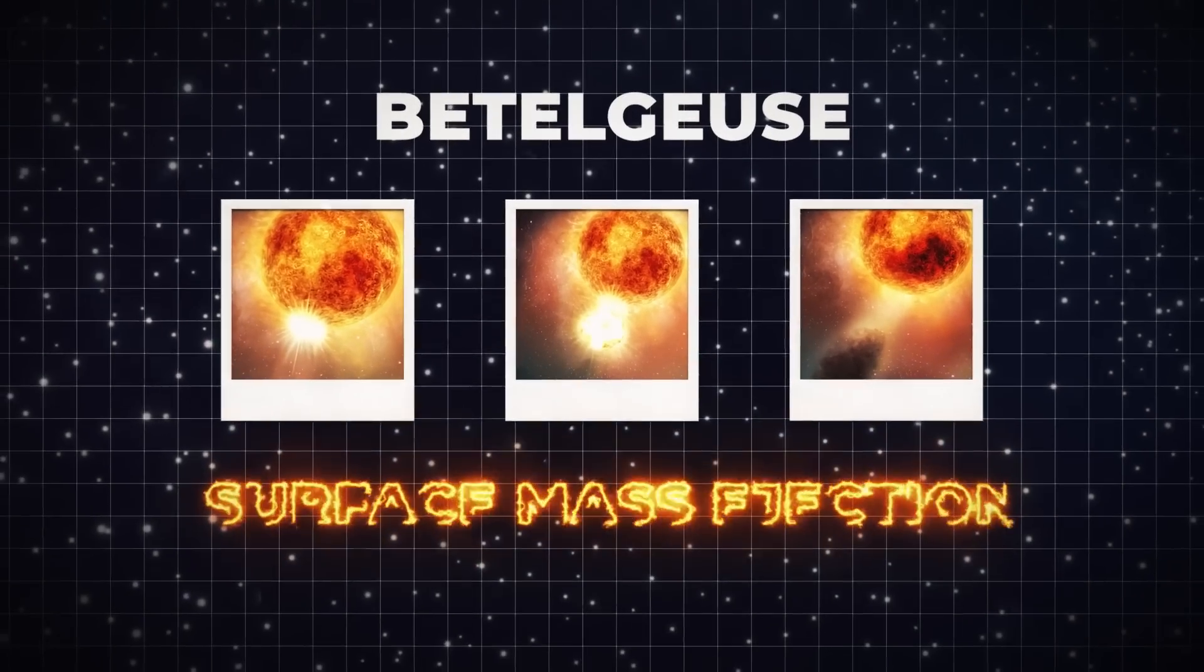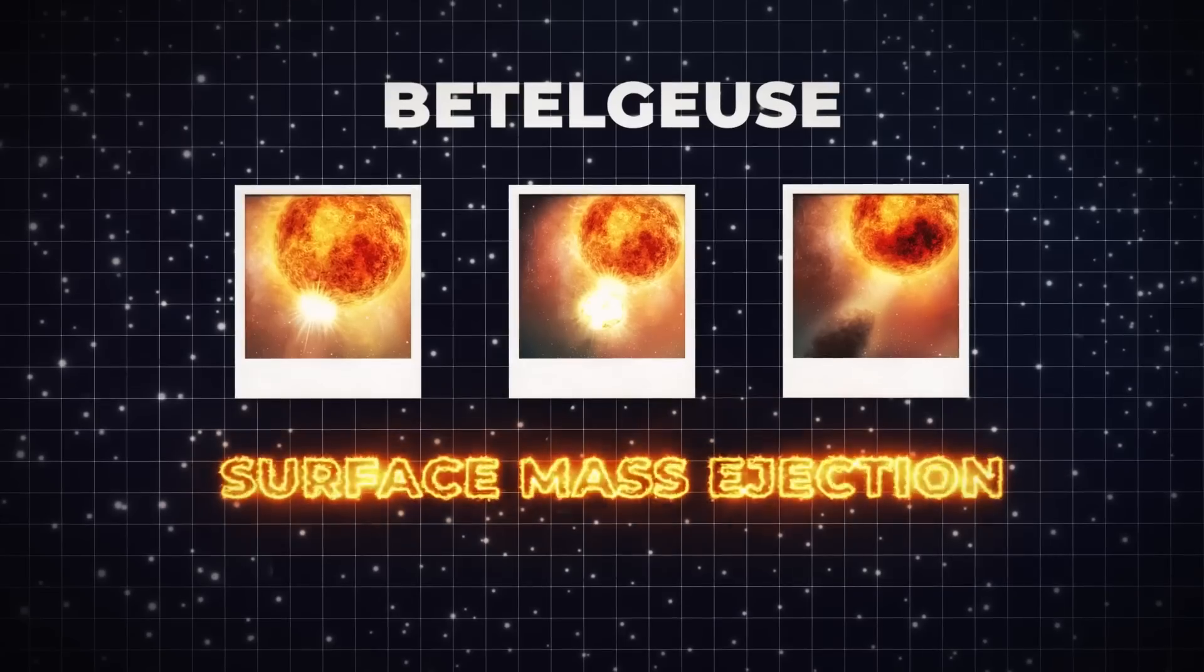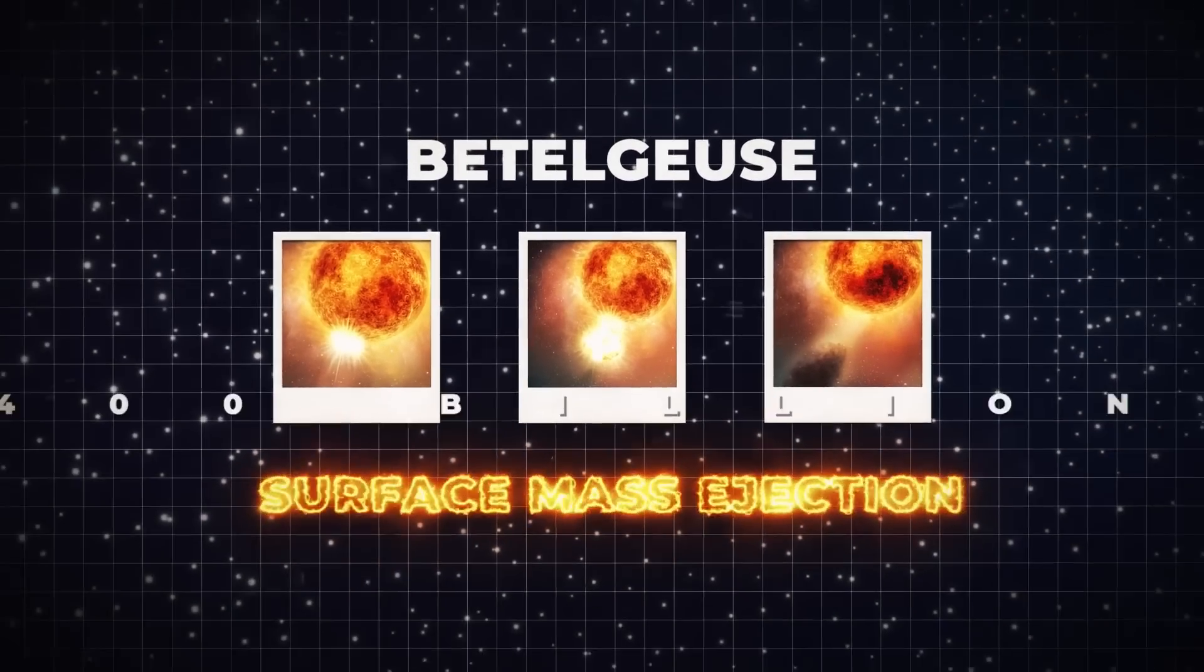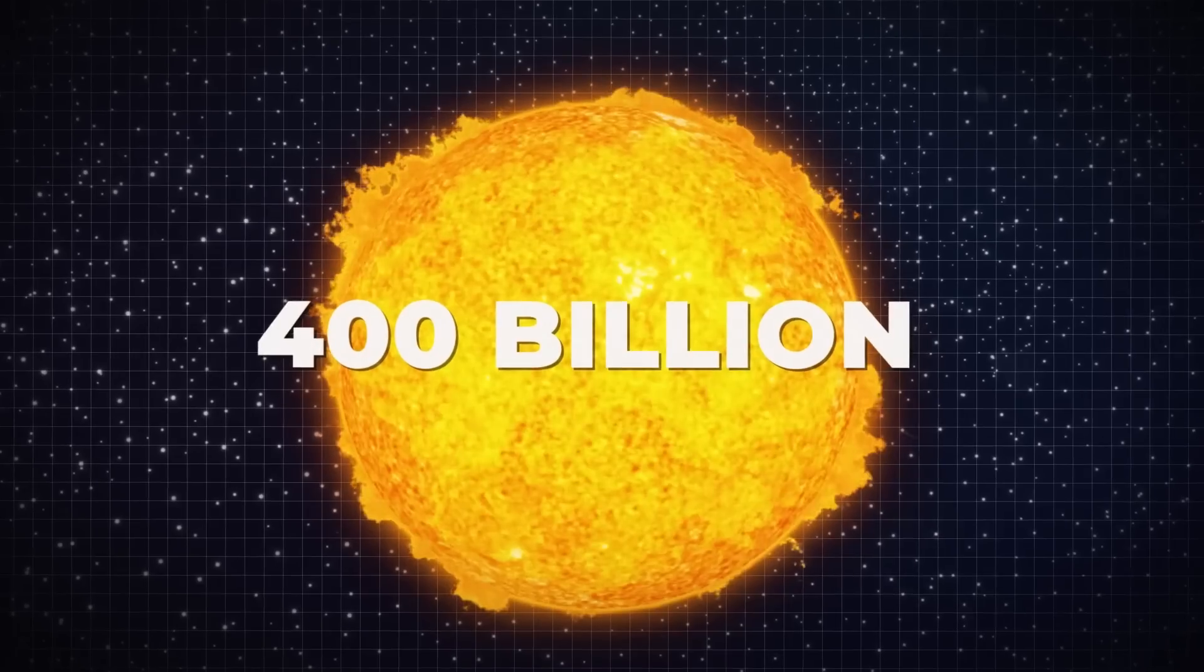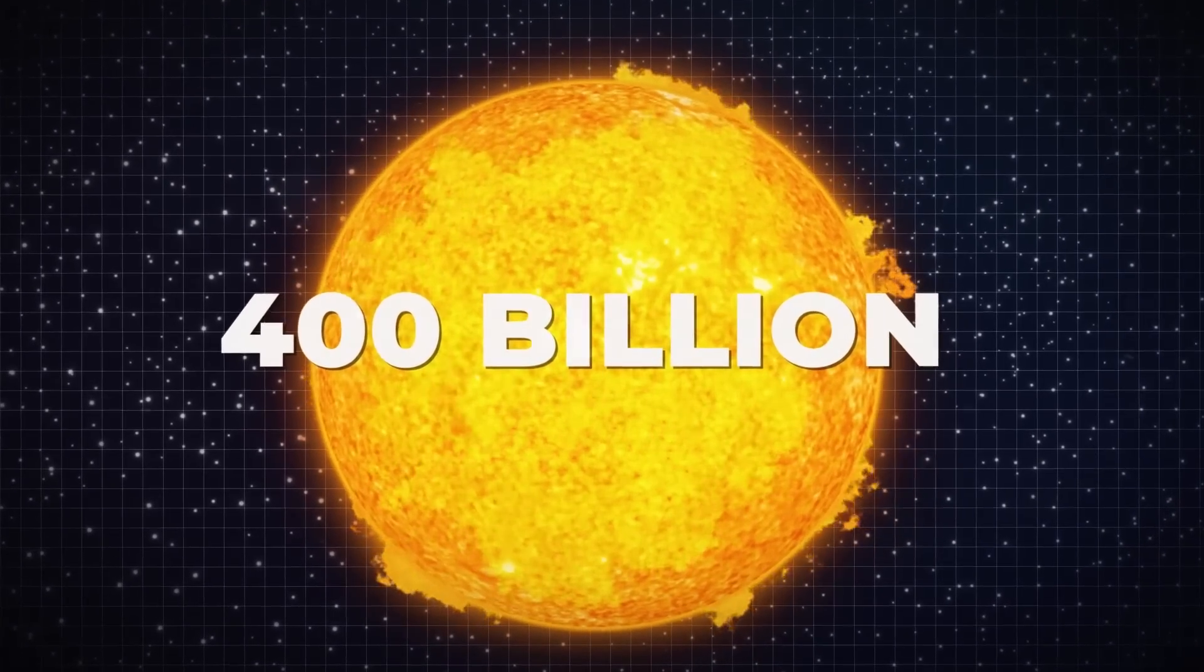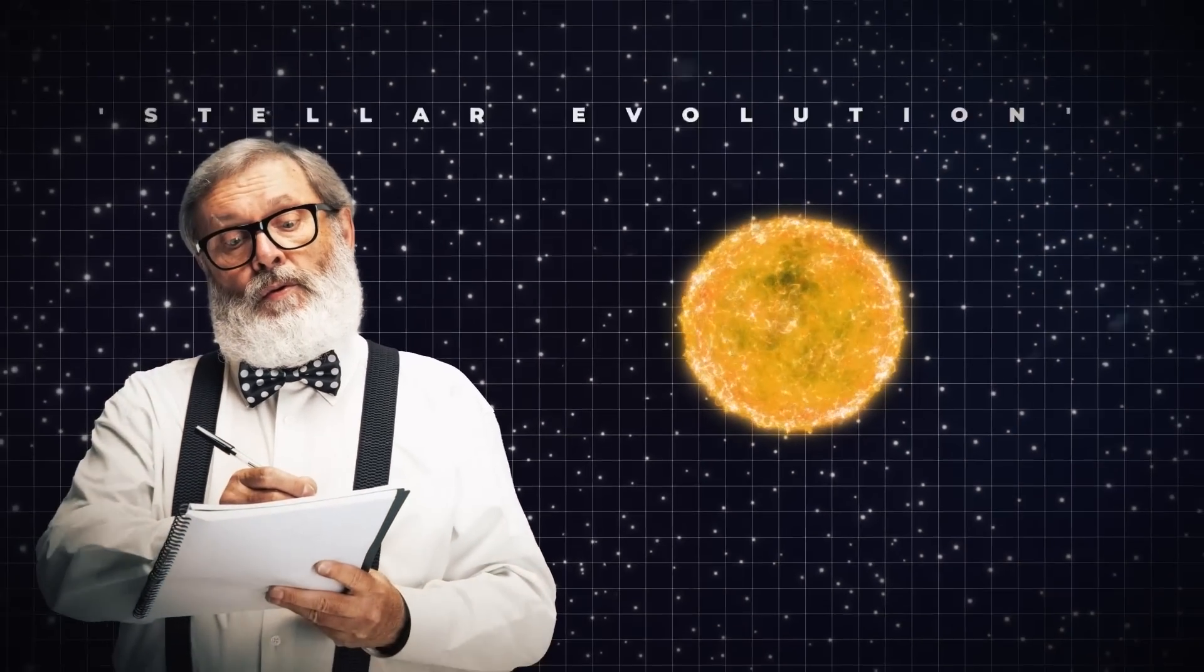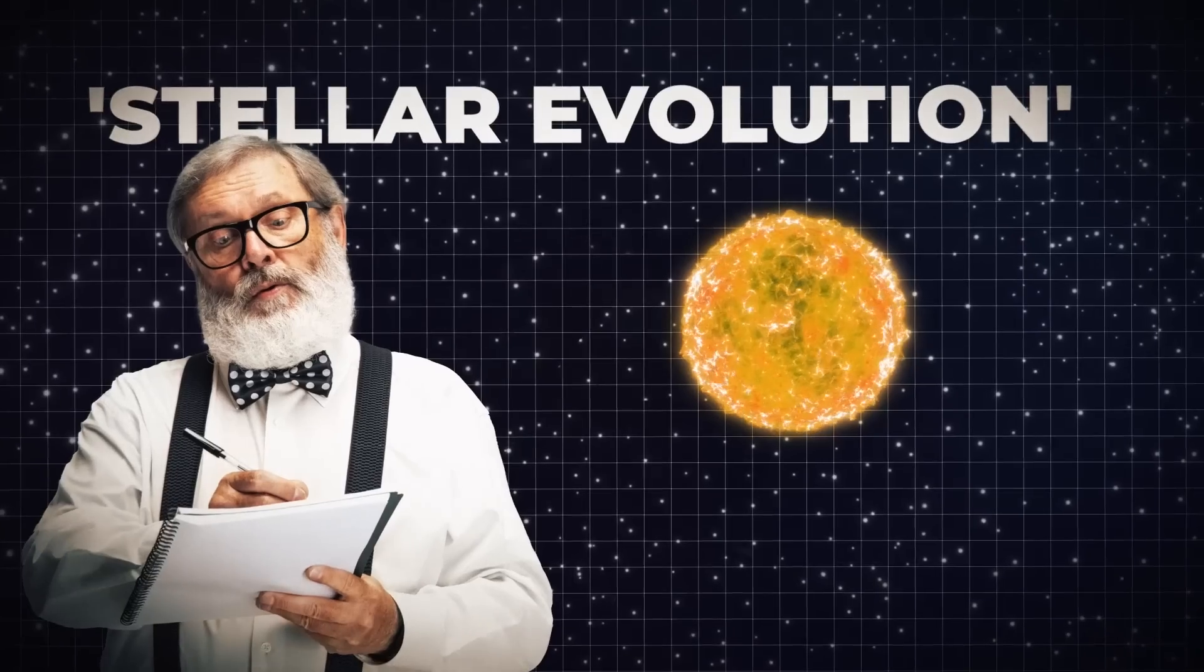The event is known as Surface Mass Ejection, and according to the Space Agency, the ejection was 400 billion times the mass of an ordinary solar flare from our Sun. Scientists term the event as watching stellar evolution in real-time.